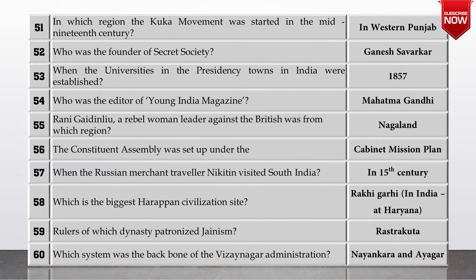Next question: who was the editor of Young India magazine? It was Mahatma Gandhi. Next, question number 55: Rani Gaidunliu, a rebel woman leader against the British, was from which region? The answer is from Nagaland.